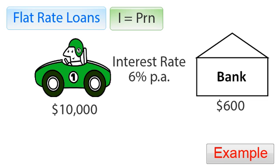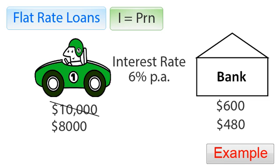The problem with this is that at the end of the year you might decide to pay off some of the loan — say $2,000 — meaning you now owe $8,000 rather than $10,000. Six percent of $8,000 is $480, so you'd naturally think you should only have to pay $480 in interest. But that's not the case.